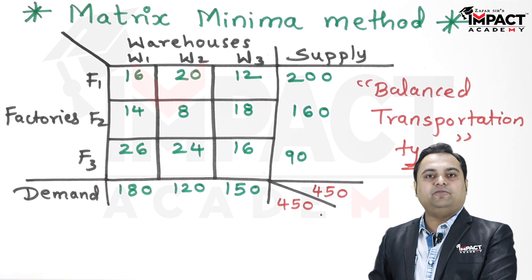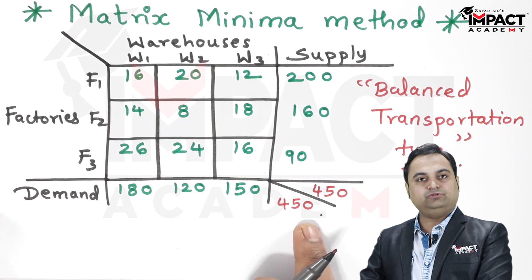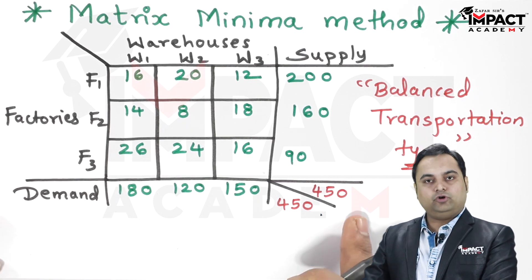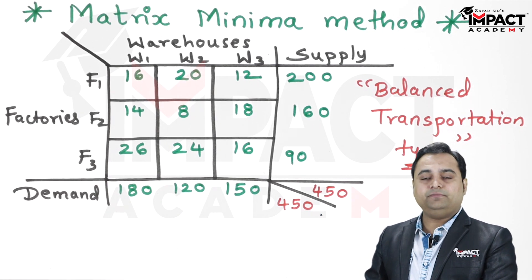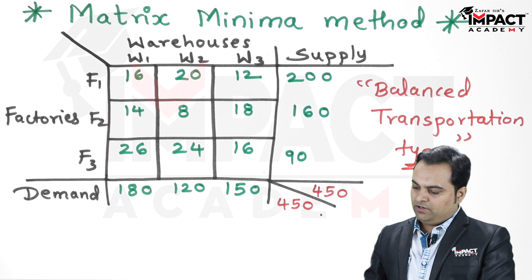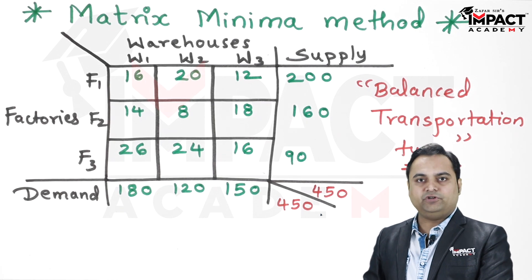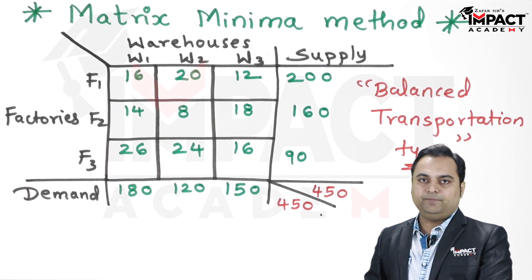It is a balanced transportation type of problem because the total supply and total demand are equal. If they are not equal, then we have to use some other measures like adding a dummy row or column depending upon the type of problem. But since here it is balanced transportation type, we can easily start with the problem.